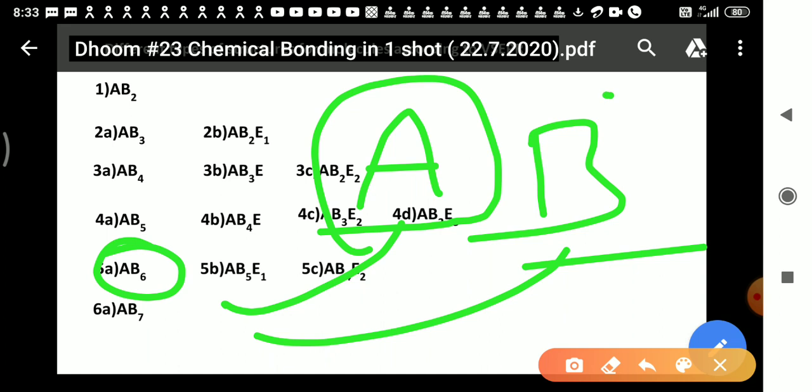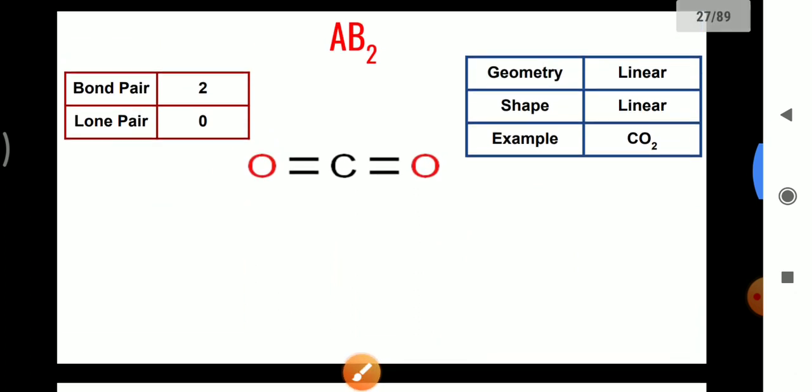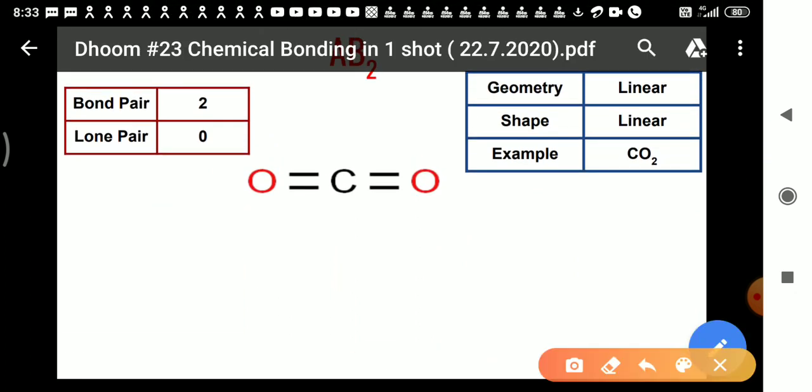Now our next target is to detect the bond pair and lone pair in any given compound. I will explain: the surrounding atoms we consider as bond pairs.